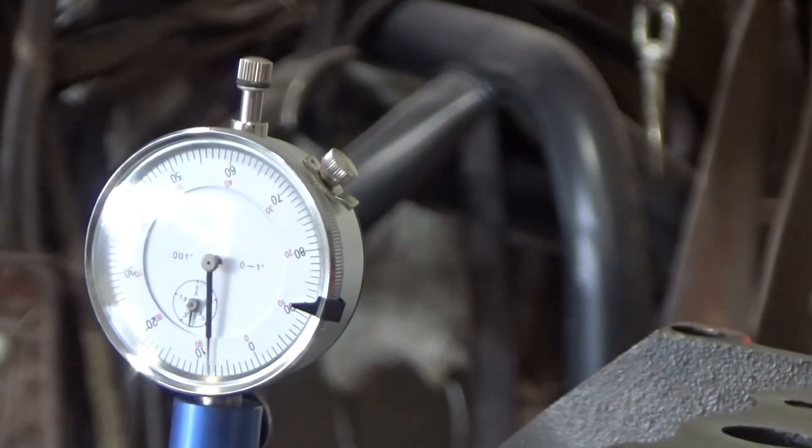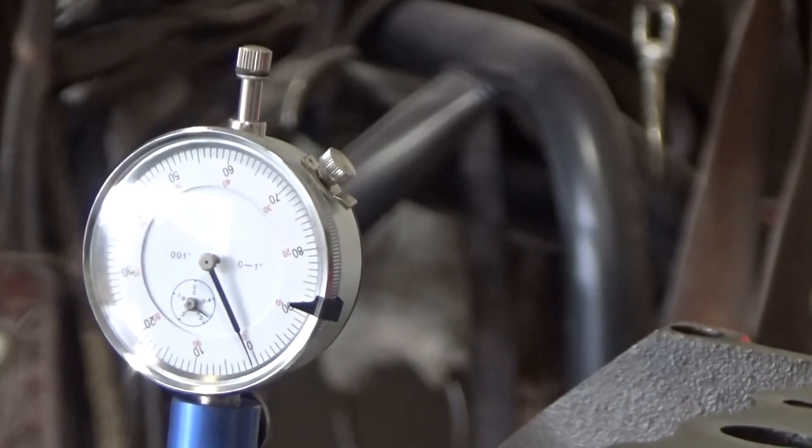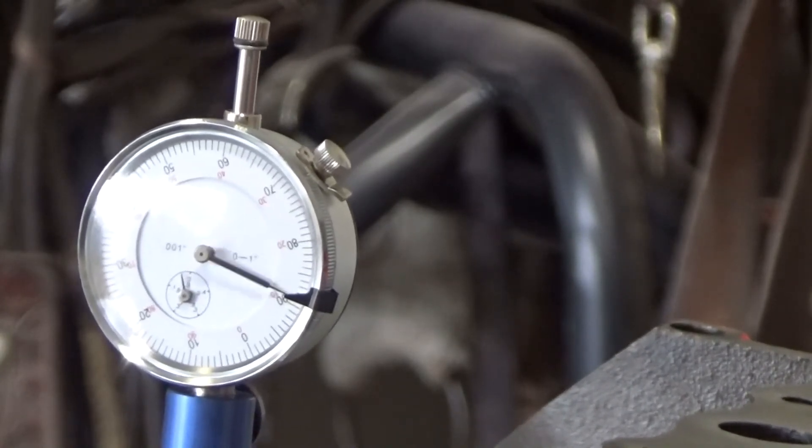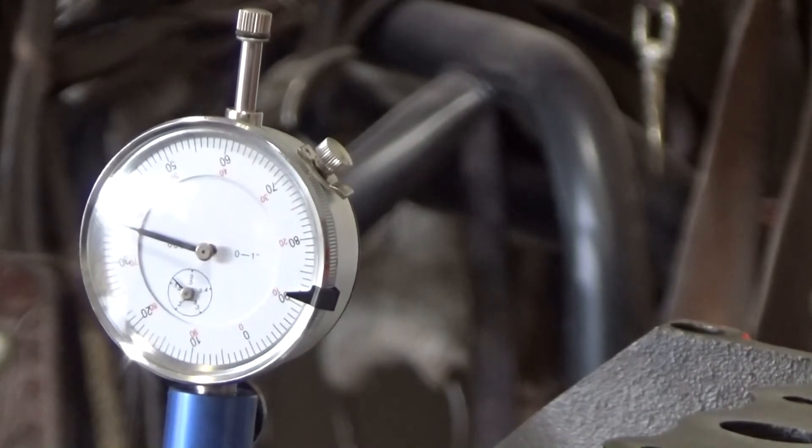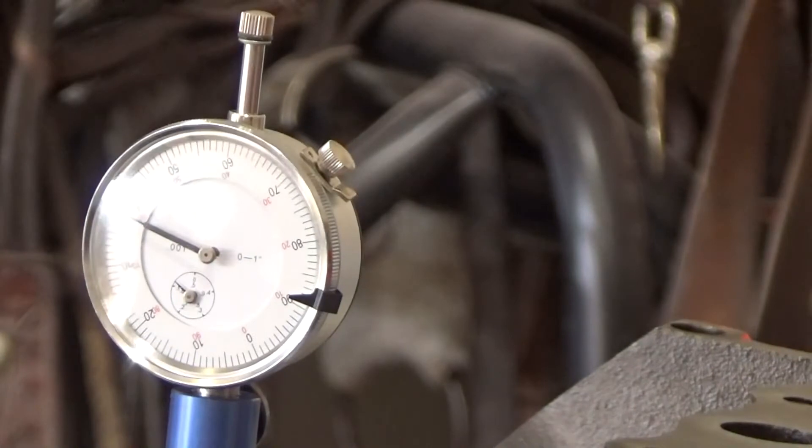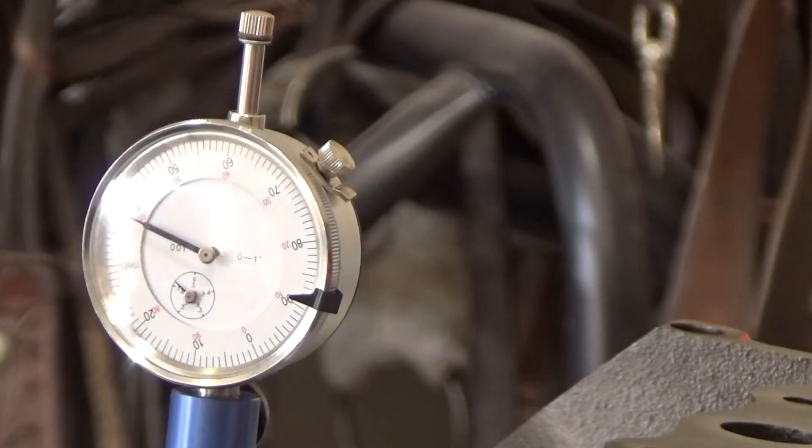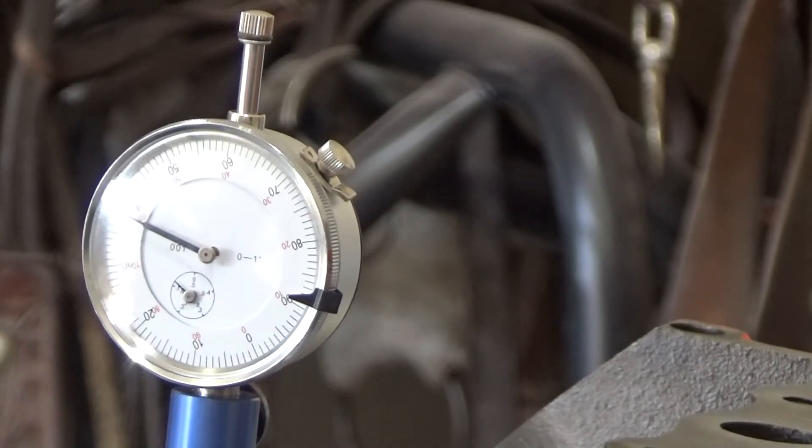Now it's starting to move. And I go all the way around. That's one hundred thousandths, two hundred thousandths, three hundred, ten, twenty, thirty. Three hundred and thirty nine is what I'm reading. And according to my cam card, the exhaust lift should be .3383. And I'm reading .339. I guess it is maybe about halfway between the eight and the nine. So it appears to be dead on at that .3383 exhaust lobe lift.